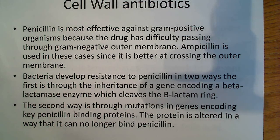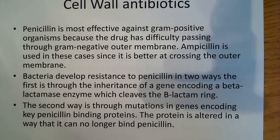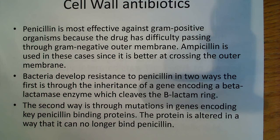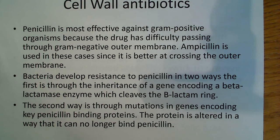Bacteria can pick up that beta-lactamase gene, resulting in the ability to cleave the beta-lactam ring. The second resistance mechanism is through mutations in genes encoding key penicillin-binding proteins. If you alter the protein — especially at the part where the ring binds — penicillin is no longer able to bind. The binding proteins no longer recognize penicillin because the binding region has some mutation disrupting it, much like an enzyme disrupted at its active site becoming non-functional.